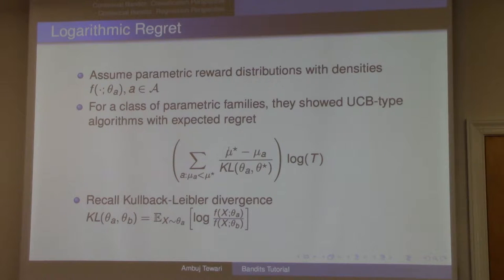In the parametric setting, if you have these K distributions indexed by parameters θ₀, θ₁, and so on, then no matter which learning algorithm you choose, you can never get regret which is up to constant better than this. And they also showed how you achieve it. So one thing to remember here is that the dependence on t is logarithmic. The constant in front of log t depends on the differences.